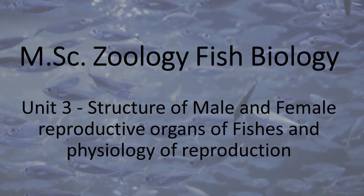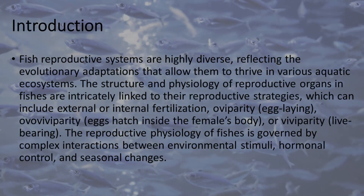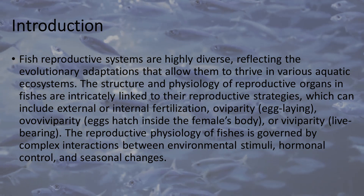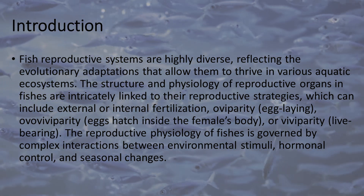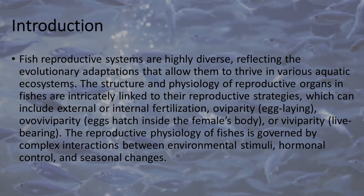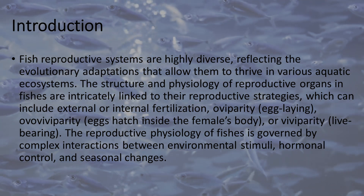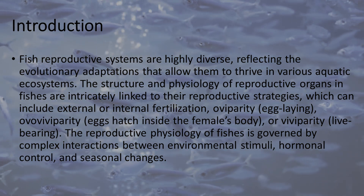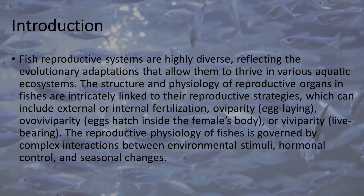Structure of Male and Female Reproductive Organs of Fishes and Physiology of Reproduction Introduction. Fish reproductive systems are highly diverse, reflecting the evolutionary adaptations that allow them to thrive in various aquatic ecosystems. The structure and physiology of reproductive organs in fishes are intricately linked to their reproductive strategies, which can include external or internal fertilization, oviparity (egg-laying), ovoviviparity (eggs hatch inside the female's body), or viviparity (live-bearing). The reproductive physiology of fishes is governed by complex interactions between environmental stimuli, hormonal control, and seasonal changes.